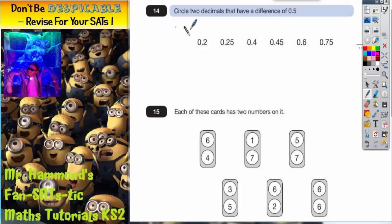Question 14. Circle two decimals that have a difference of 0.5. Now there's a massive trap here that some people will fall into. They will look at 0.2 and 0.25 and they will think that the extra 5 on the end there would just be the difference of 0.5. So some people are going to circle those two. But if you circle those two, that is incorrect.